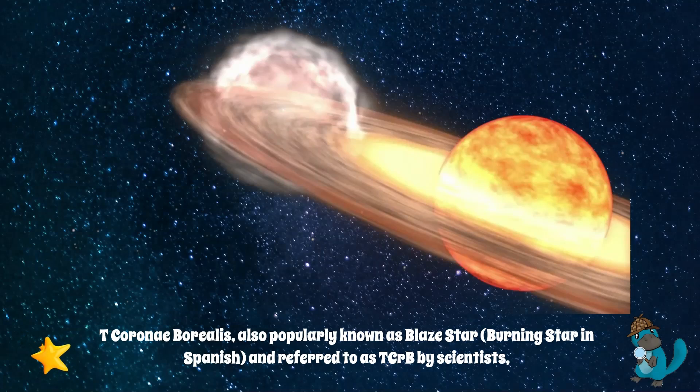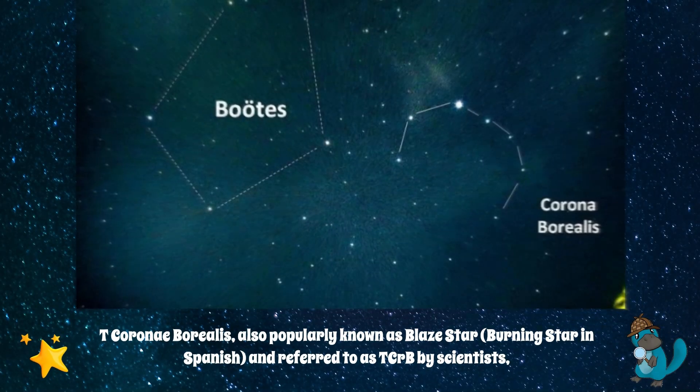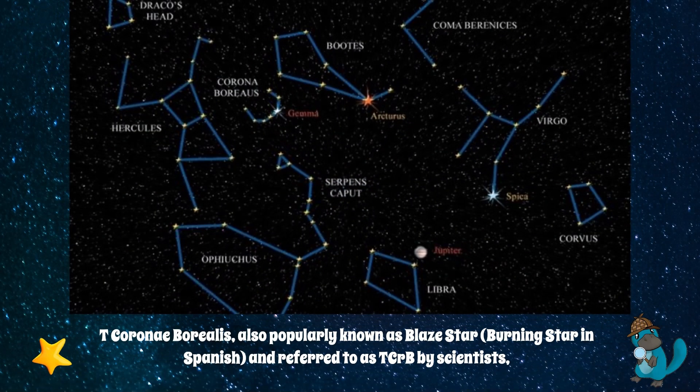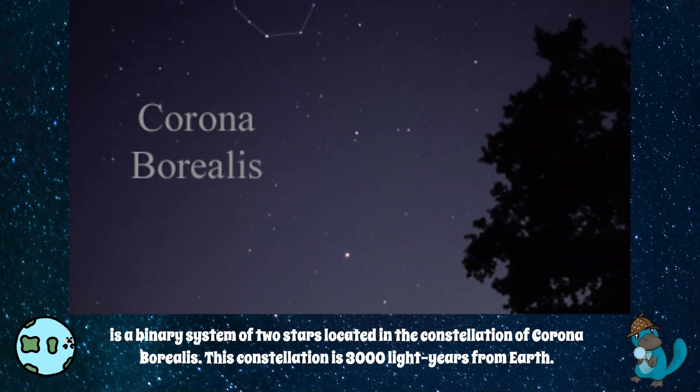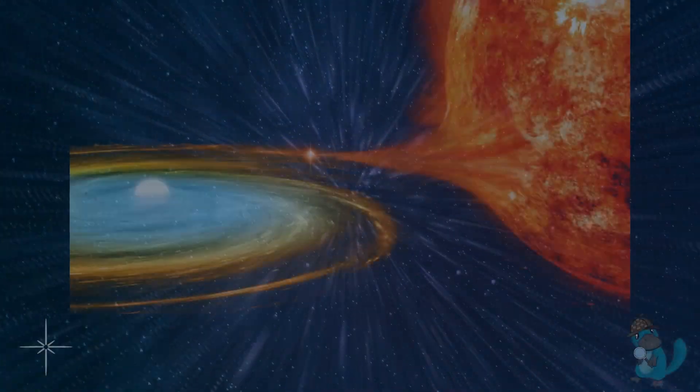T. Coronae Borealis, also popularly known as Blaze Star, and referred to as TCRB by scientists, is a binary system of two stars located in the constellation of Corona Borealis. This constellation is 3,000 light-years from Earth.